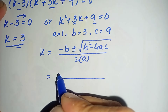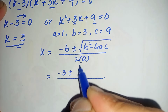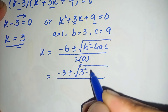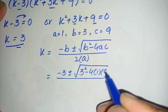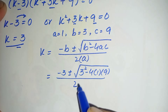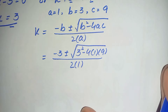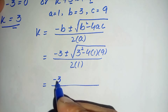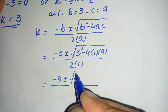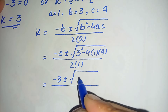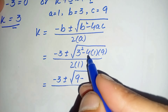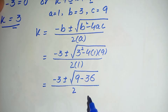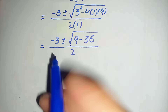Substituting the values: k equals negative 3 plus or minus square root of 3 squared minus 4 times 1 times 9, divided by 2 times 1. This becomes: negative 3 plus or minus square root of 9 minus 36, divided by 2.